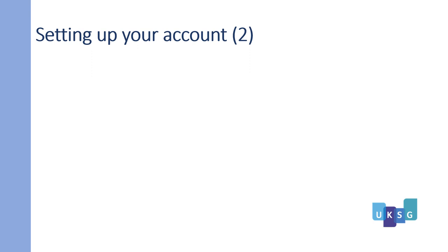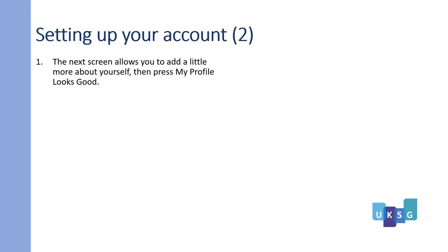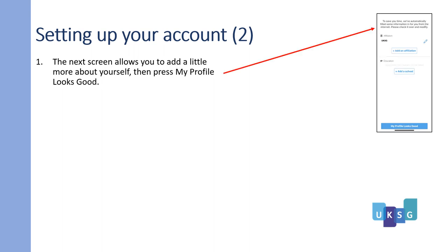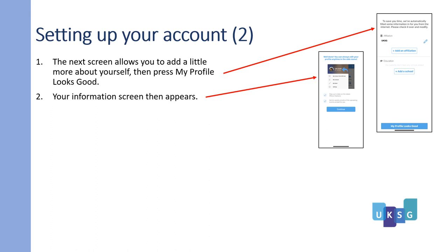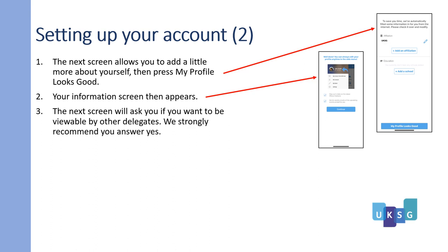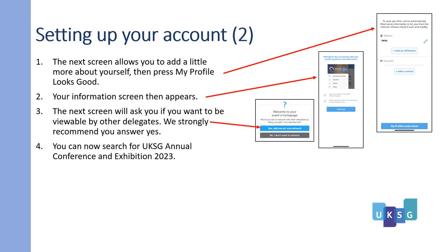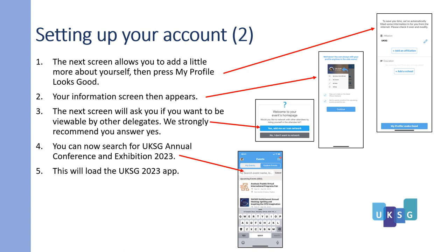Setting up your account, slide two. The next screen allows you to add a little more information about yourself. When you have entered it, press 'my profile looks good'. Your information screen then appears. The next screen will ask you if you want to be viewable by any other delegates — we strongly recommend you answer yes. You can now search for UKSG Annual Conference and Exhibition 2023, which will load the UKSG 2023 app.